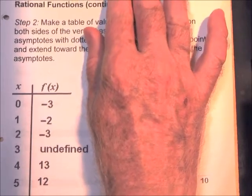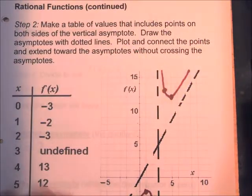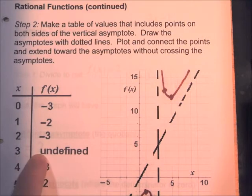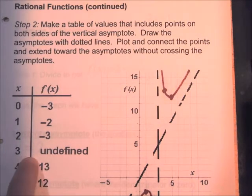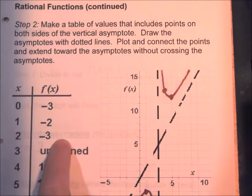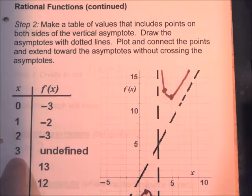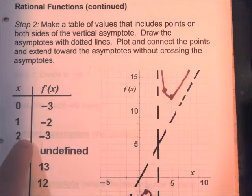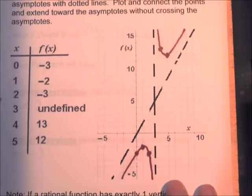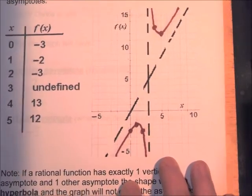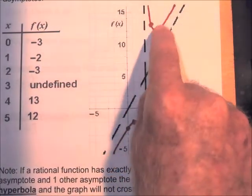We want to make a table of values and pick points on either side of the vertical asymptote, where the function is undefined at x equal to 3. I'll pick some numbers less than 3: 0, 1, and 2. And some numbers more than 3: 4 and 5. Then compute f of x for those points and plot them.